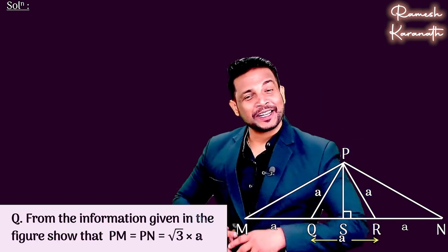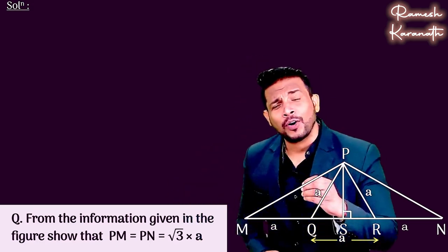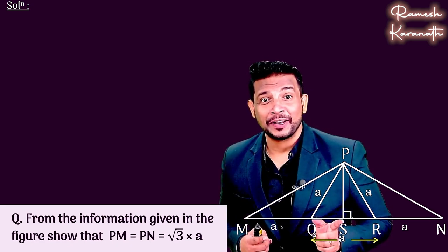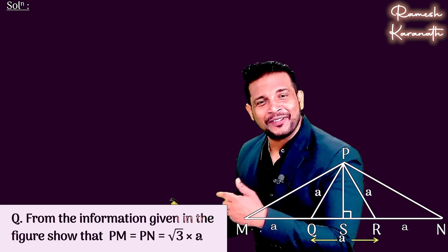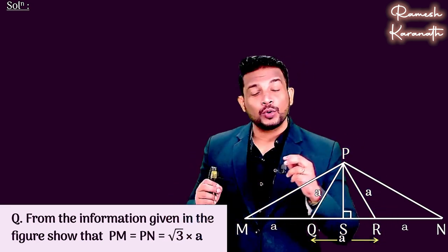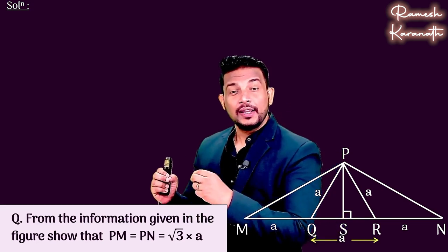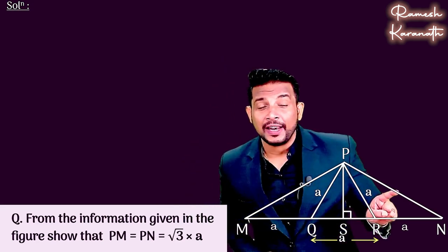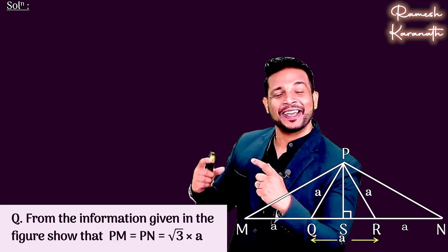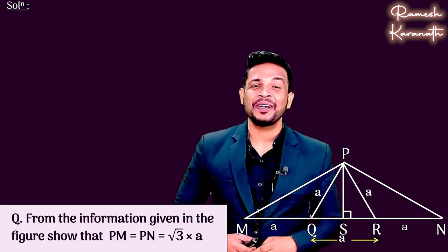In today's video, this is a very important problem. First of all, we have given information in the figure and from the given information, we need to show that PM is equal to PN which is equal to root 3 times a. That means we have to show PM and PN, both values are equal to root 3 into a.